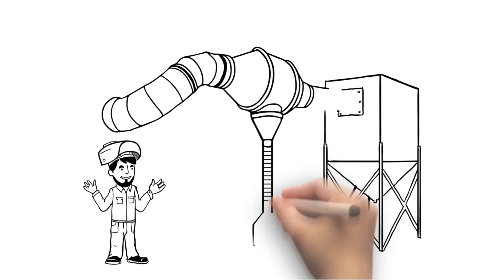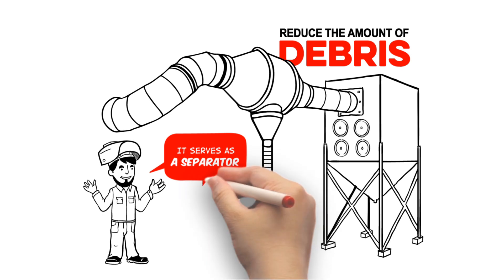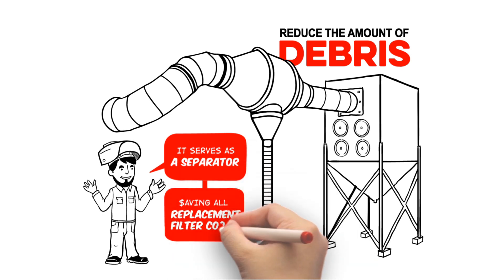Many customers find the U.S. Duck spark trap serves as a separator, reducing the amount of debris that needs to be collected in the collector, thus saving on replacement filter costs.